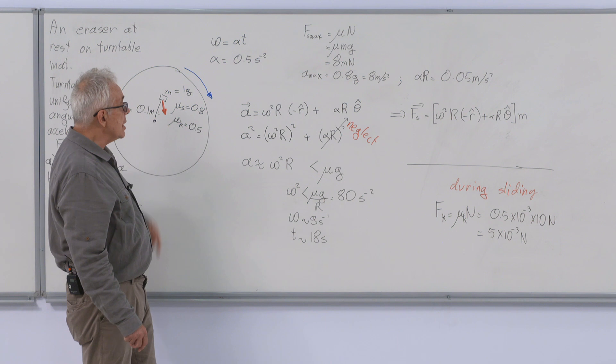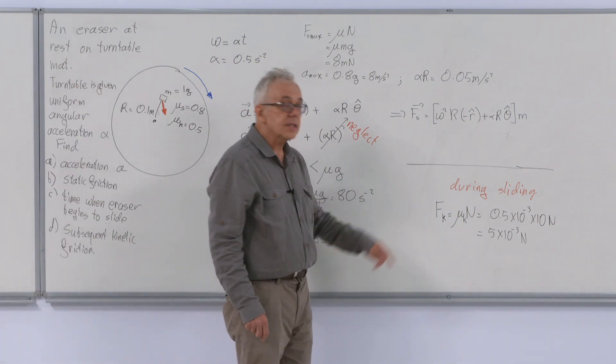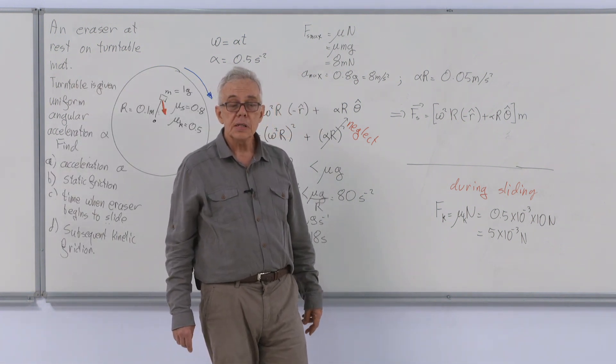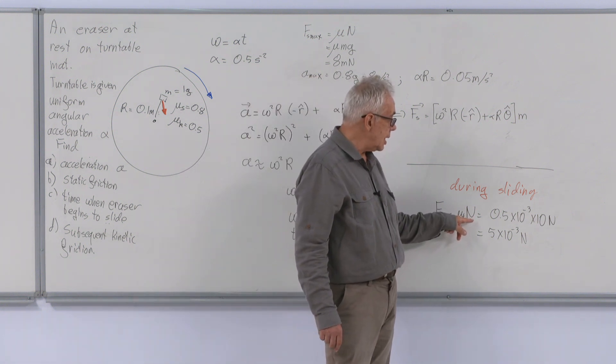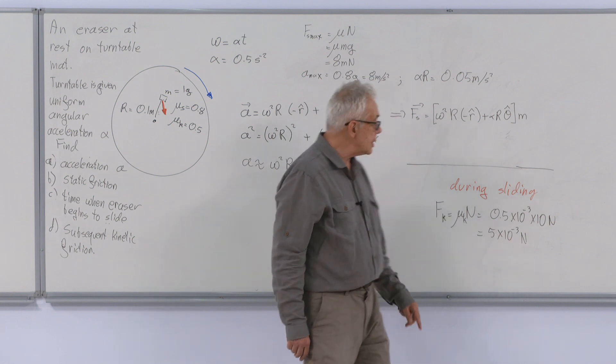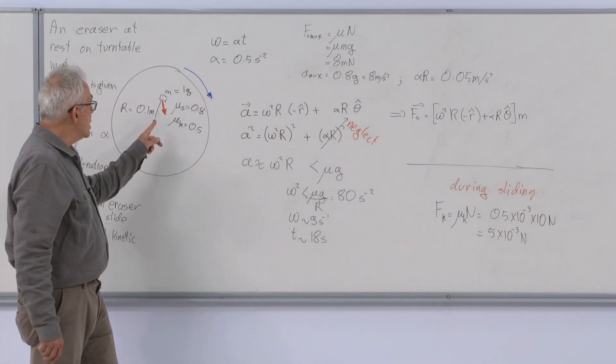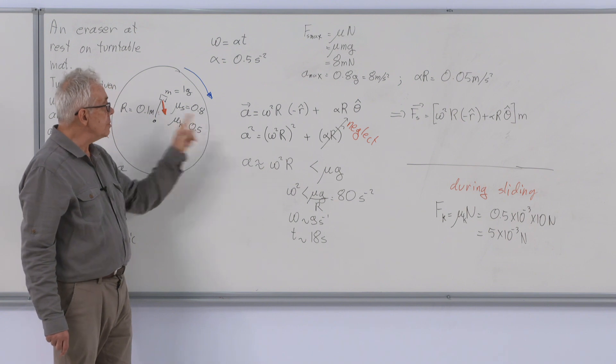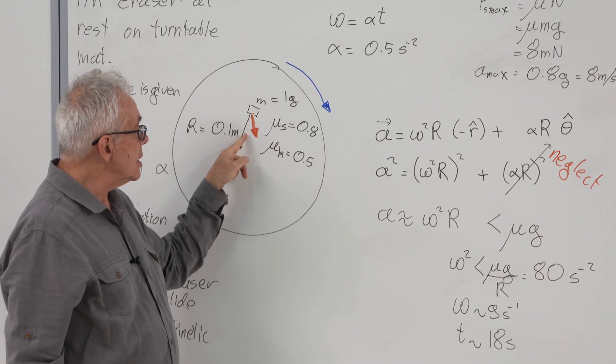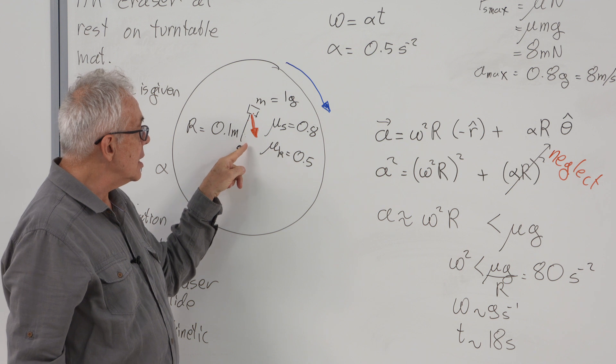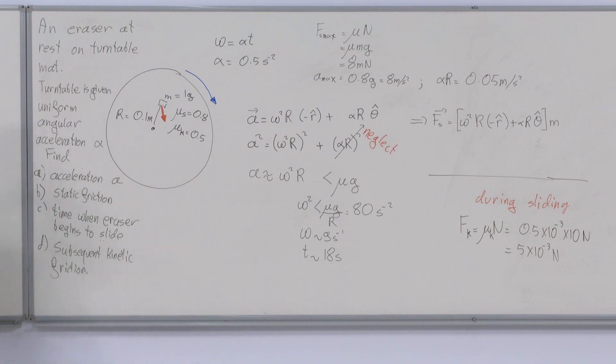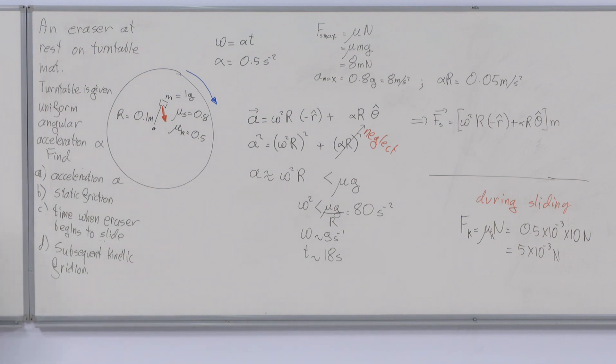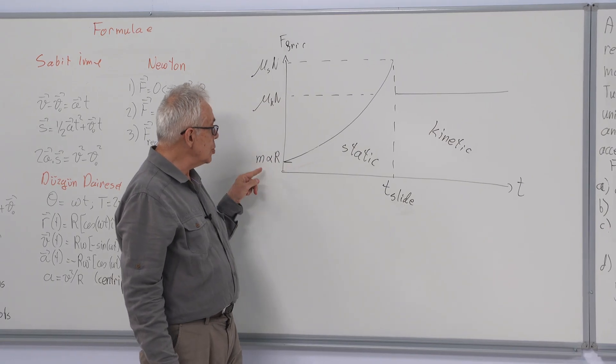Now, once it starts sliding, it's very difficult to find the direction of the kinetic frictional force, but its magnitude is mu k times normal, about 5 mN. The direction of the static friction before sliding is, since it is accelerating, somewhat ahead of the center.